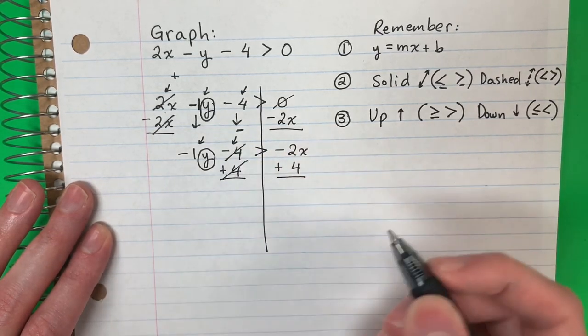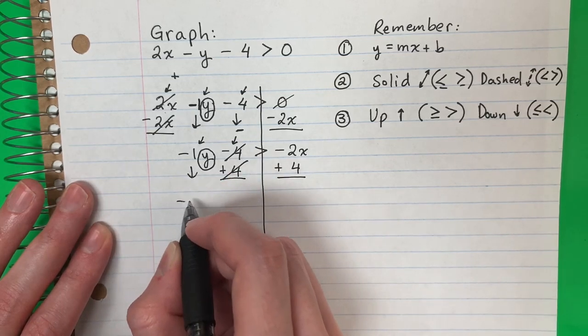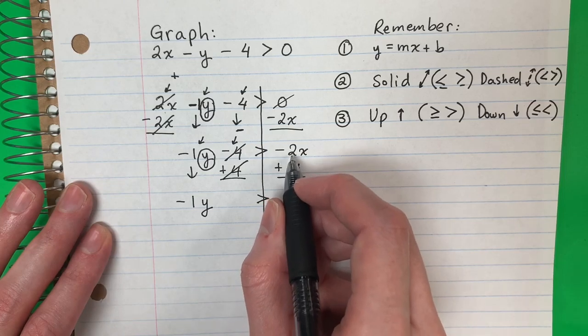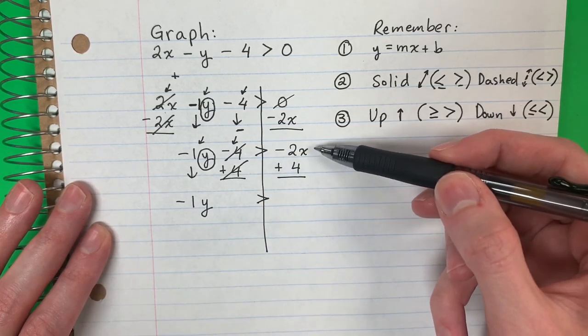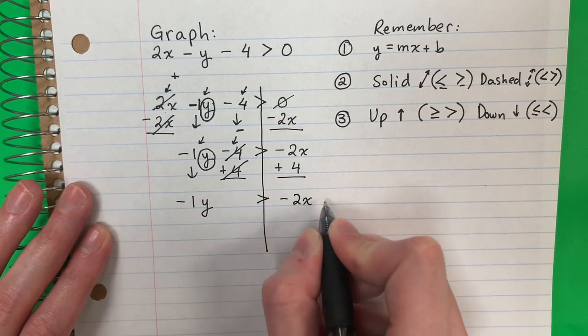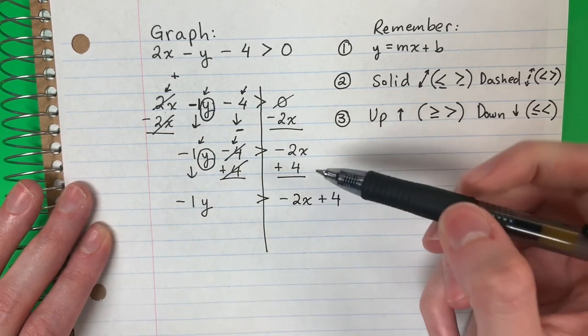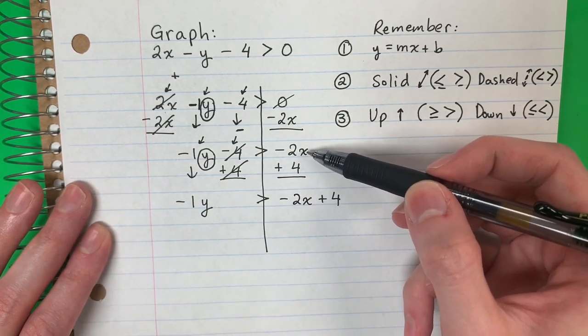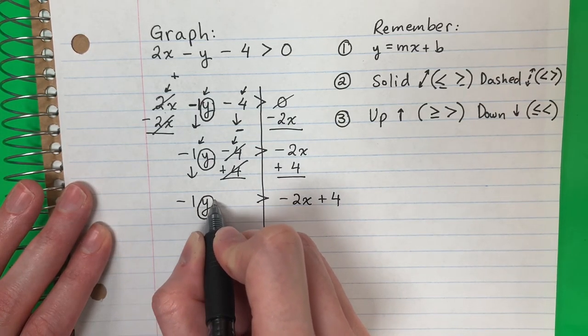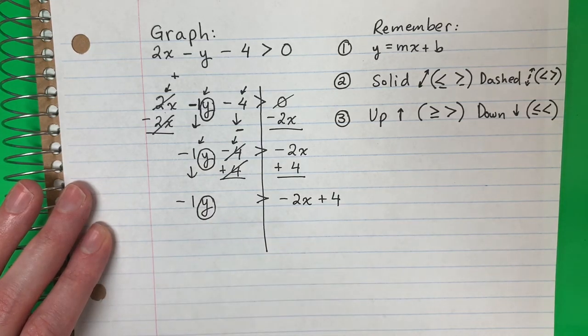This cancels. It's 0. Copy. Negative 1y. Greater than. Negative 2x plus 4. Copy or calculator. I will copy because they have different letters. Here x. Here no x. Aquí hay x. Aquí no hay. So I want the y alone. Quiero la y sola.